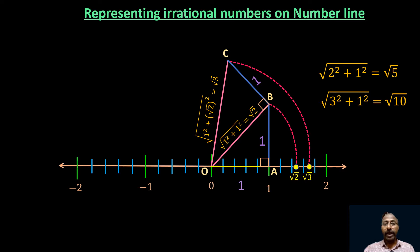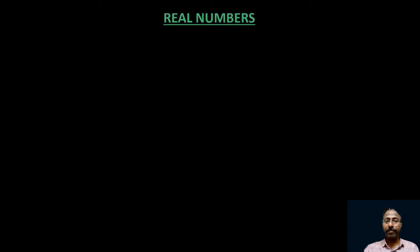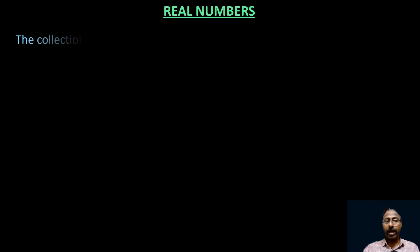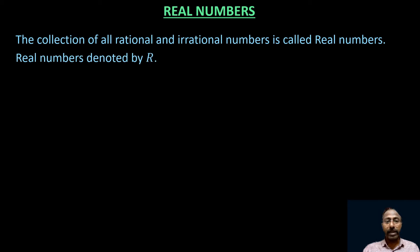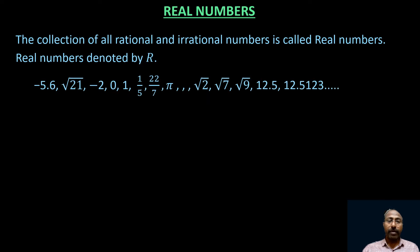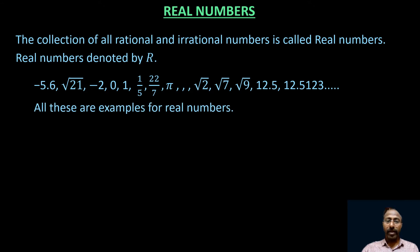Now let's discuss real numbers — our chapter. What are real numbers? The collection of all rational and irrational numbers is called real numbers. Rational numbers can be expressed in the form p/q, and irrational numbers cannot. All types of numbers are covered in real numbers. Real numbers are denoted by capital letter R. Examples: −5.6, √21, −2, 0, 1, 1/5, 22/7, π, √2, √7, √9, 12.5, and so on — all of these are examples of real numbers.